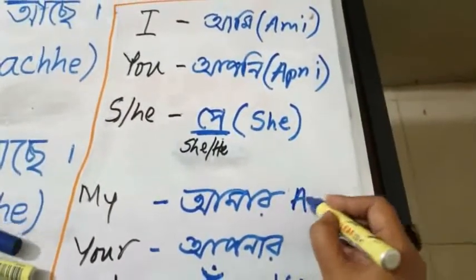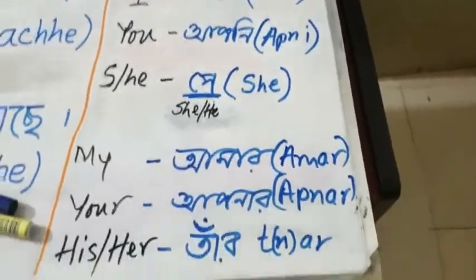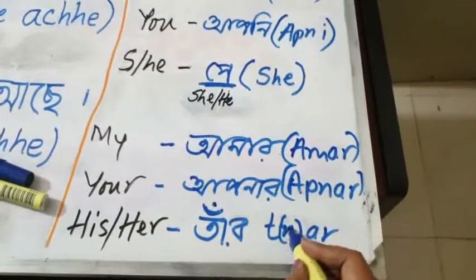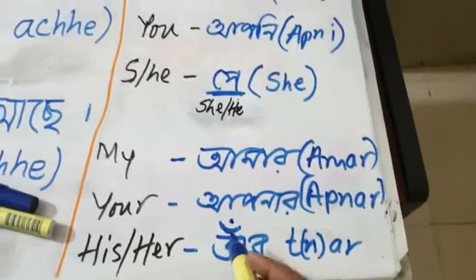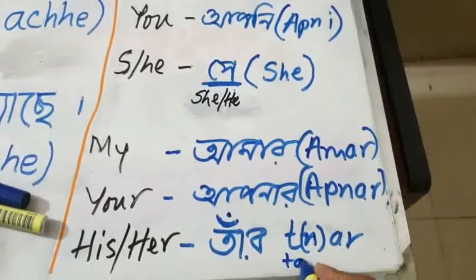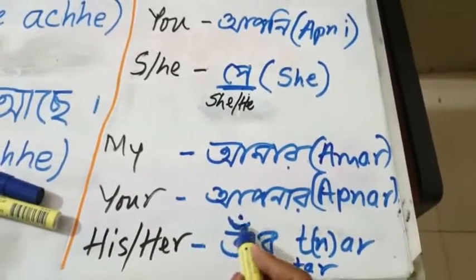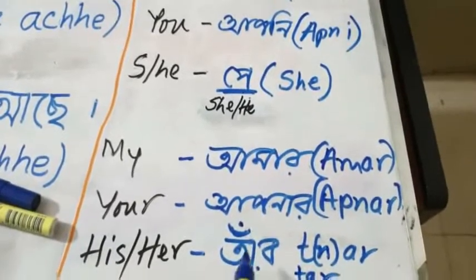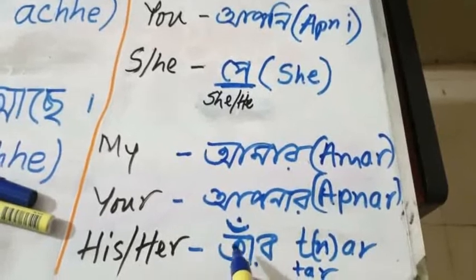Let me write it in English letters: 'amar,' 'apnar' — and there is an N inside brackets because this is a nasal letter, just to denote the nasalization. 'Tar' has nasalization too — this is not 'tar,' this is 'tar' with nasalization. If you do not put the nasalization, that means you are not showing enough respect to that person. This is an honorific form, so please pronounce it with proper nasalization.